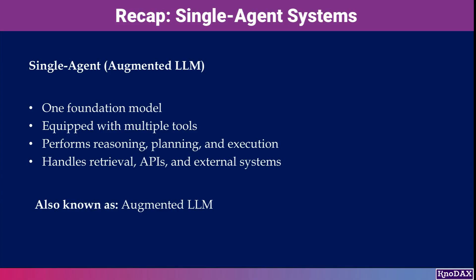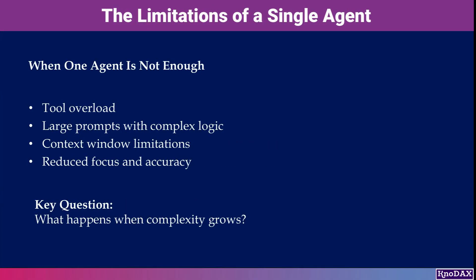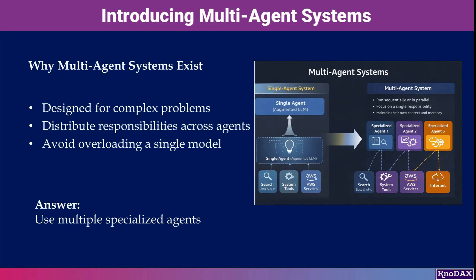But as problems grow more complex, a single agent can start to struggle. It may have access to too many tools, overly long prompts, or deeply nested logic. Context window limits and decision fatigue can reduce accuracy and reliability. So what do we do when one agent isn't enough? That's exactly where multi-agent systems come in.